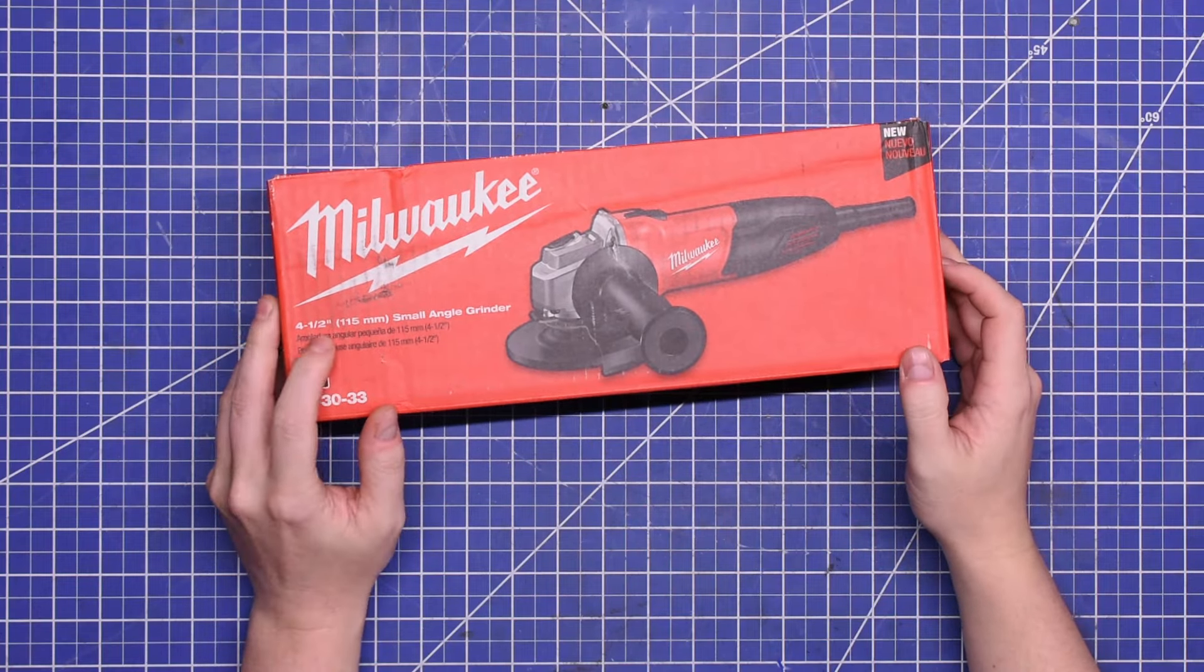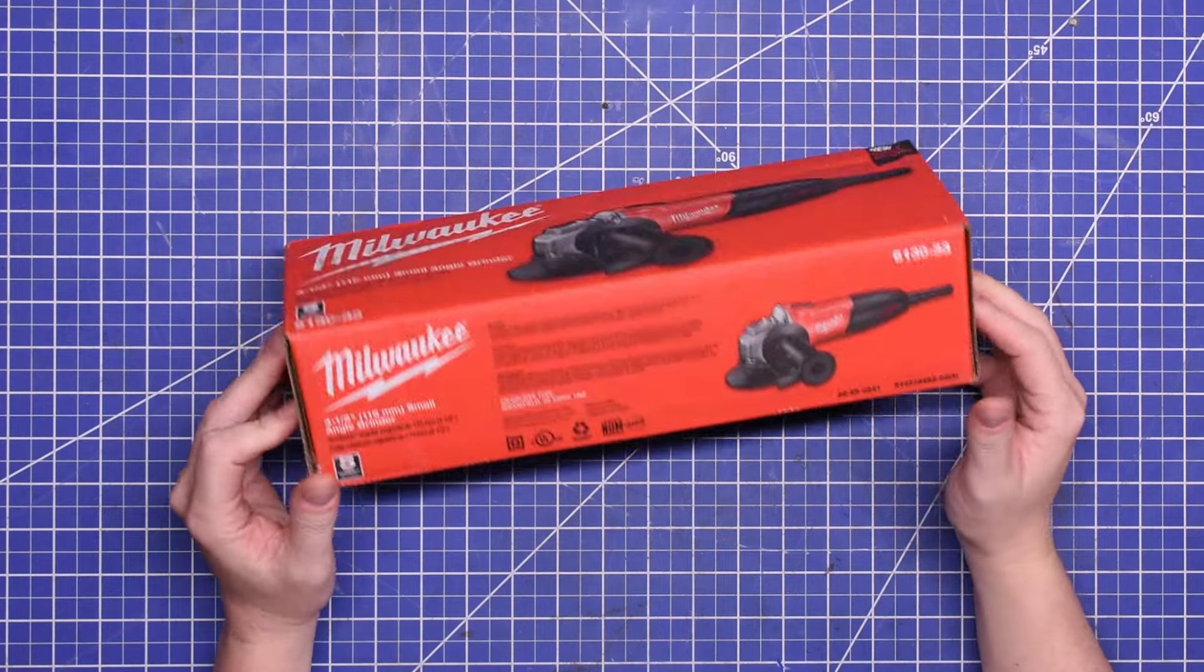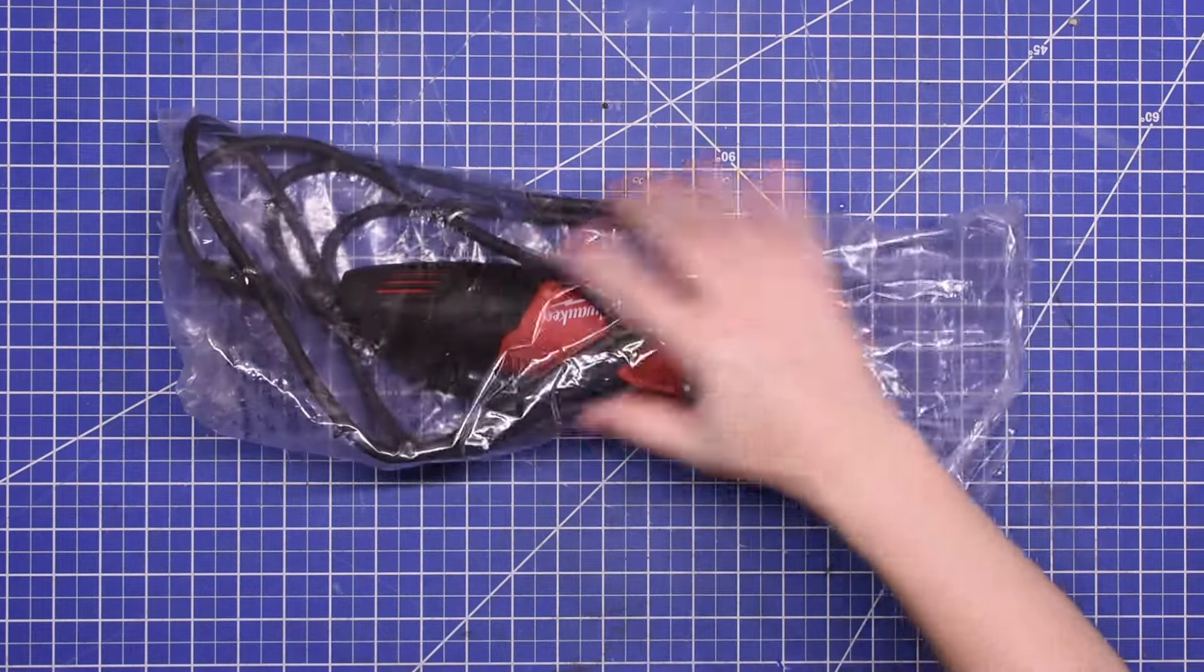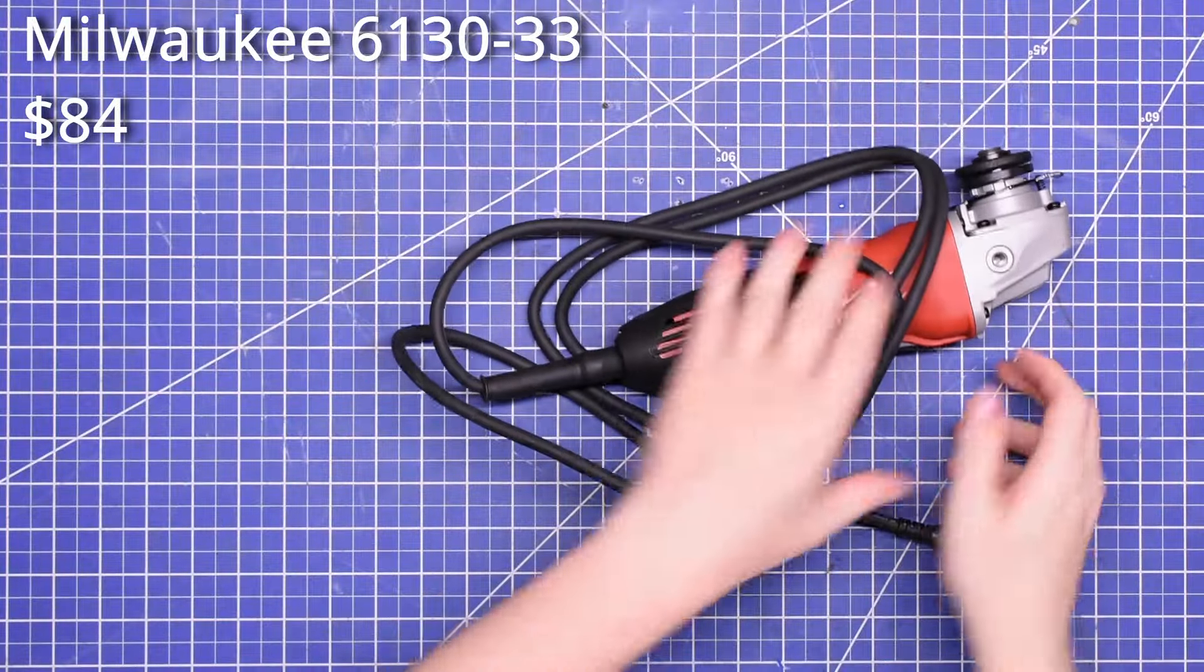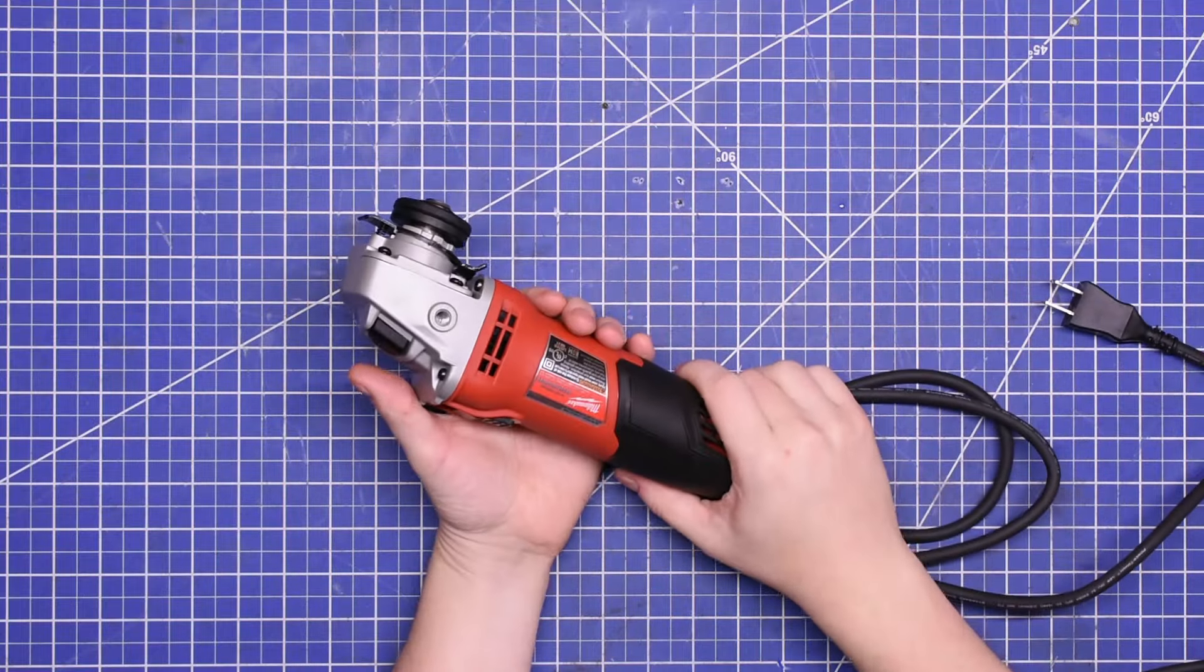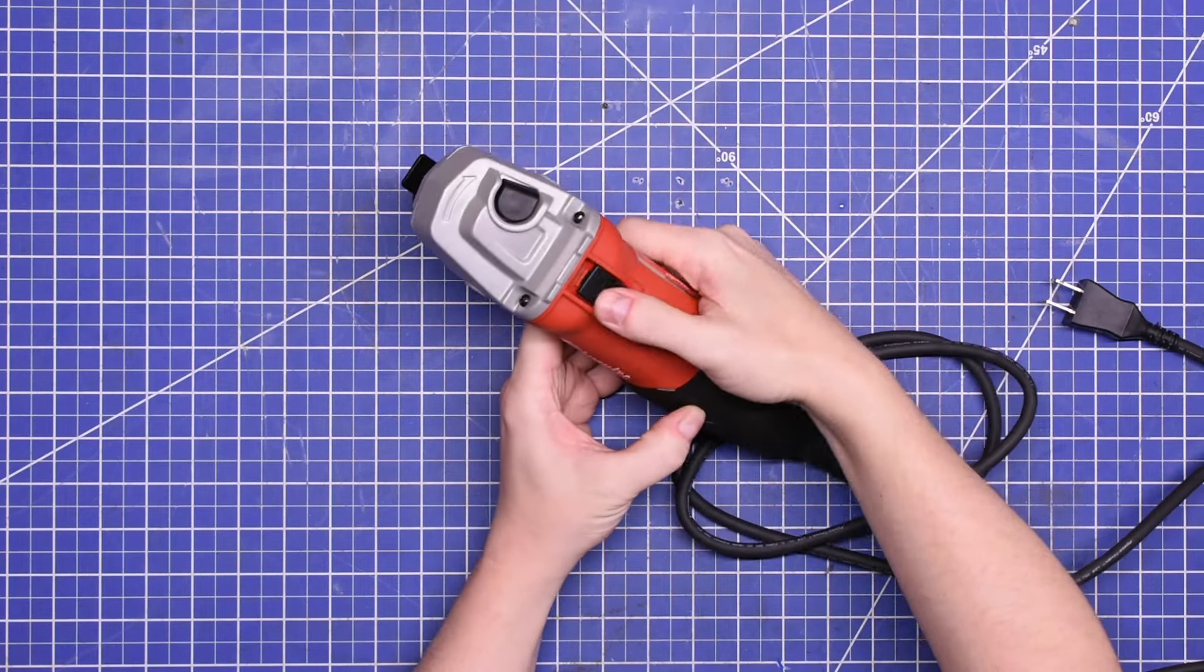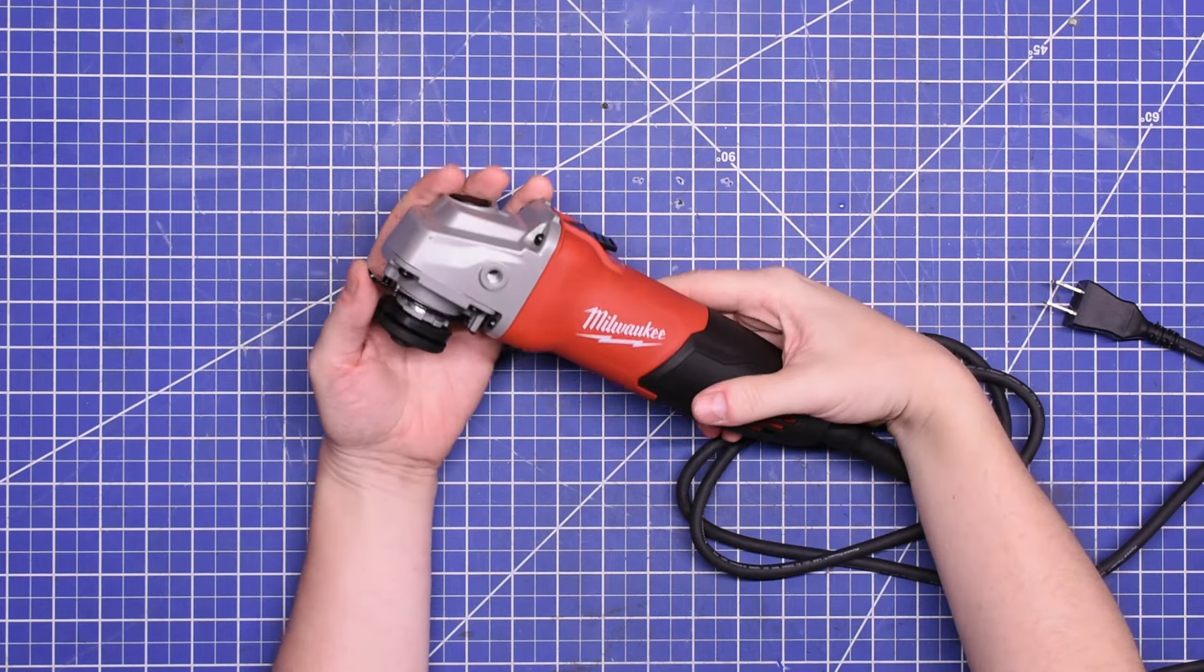This is Milwaukee's latest 6130 model corded four and a half inch angle grinder that we bought because it's the most popular model sold at Home Depot. We paid $84 for it. It's a top locking switch style design and it's about the size of the tool that you would imagine when most people think four and a half inch angle grinder. This particular model is rated for seven amps, which, well, does that really tell you how powerful it is?